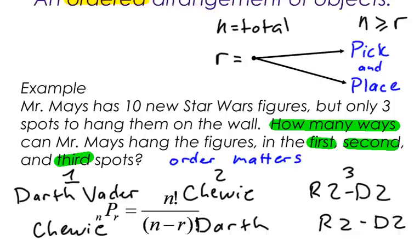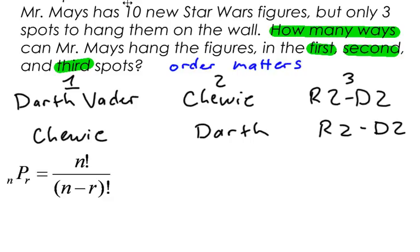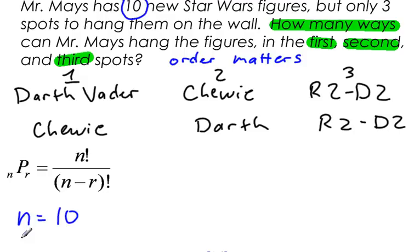And let's bring our formula down here with us so we can pick out what we have. So Mr. Maze has ten new Star Wars figures. So N is the total number that we have. That's ten. And there's only three spots to hang them on the wall, so I want to choose three to hang on the wall in a particular order. So R is equal to three. So let's do the math. This would look like ten P three. And lots of times people will say ten pick three. Since it starts with a P, we are picking and placing. All right, let's put it into the formula.